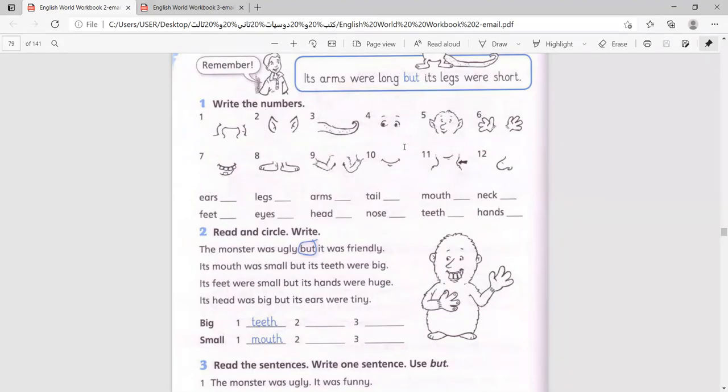So where are the ears? Number two. Legs, one. Okay, arms, nine.